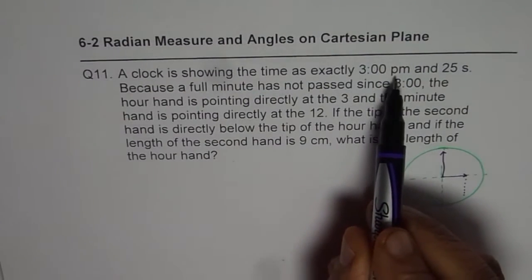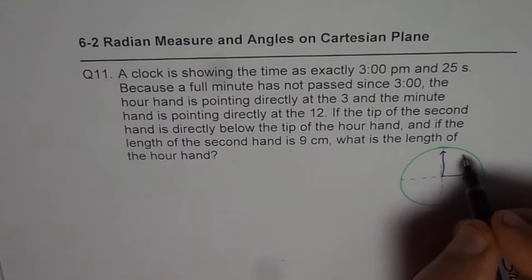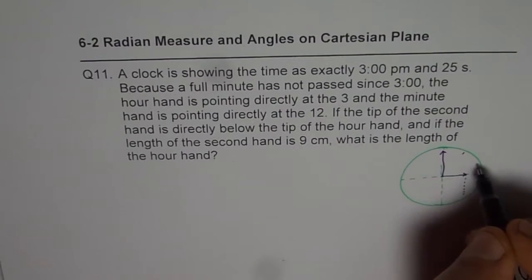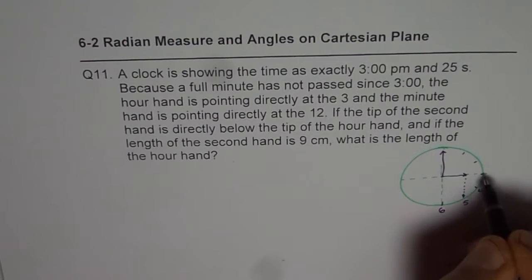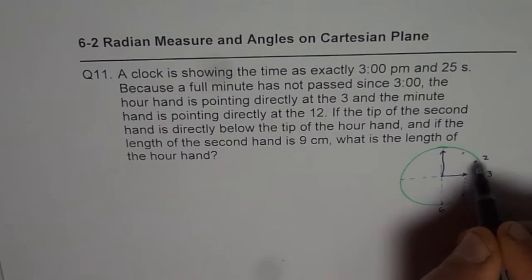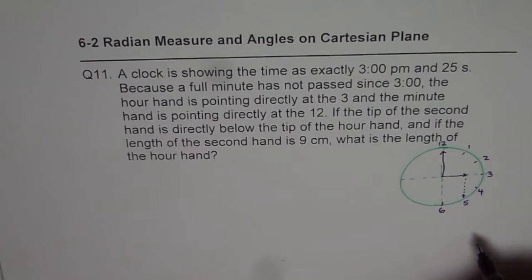The time is 3 PM and 25 seconds. 25 seconds really mean that this is like 1, 2, 3, 4, 5 and 6. So this is 6, this is 5, this is 4, 3, 2, 1, this is 12. So that is half of our clock.